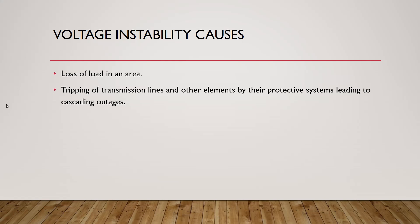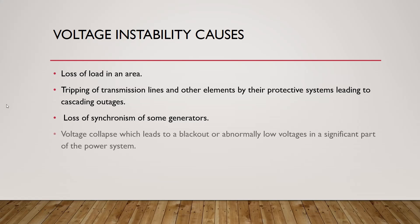Number two is the tripping of transmission lines and other elements by their protective systems, leading to cascading outages. This affects the power generated because the power equation depends on the equivalent reactance X — so tripping a transmission line affects X and therefore the generated power. Number three is the loss of synchronism of some generators due to the voltage instability.